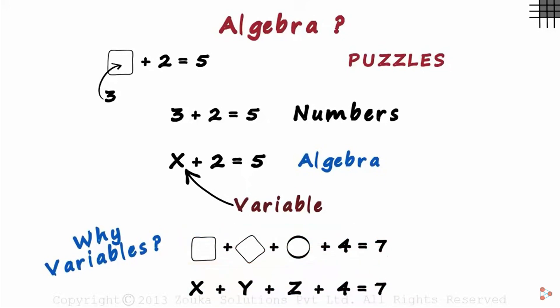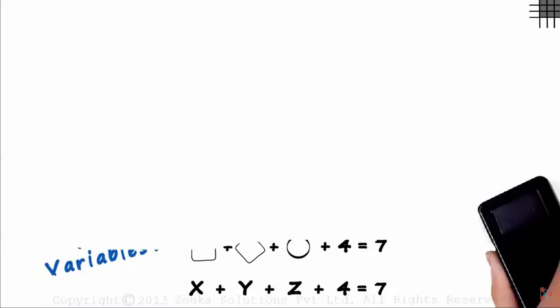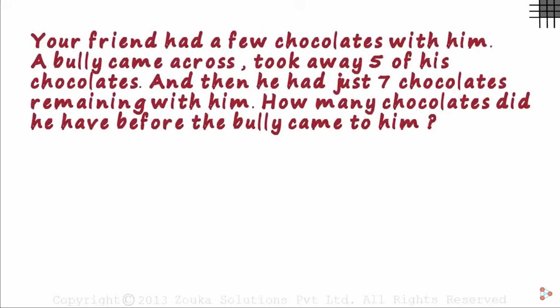But what's the real advantage of using variables? Read this short story and the question that follows. Your friend had a few chocolates with him. A bully came across, took away 5 of his chocolates. And then he had just 7 chocolates remaining with him. How many chocolates did he have before the bully came to him? This question has 40 words.